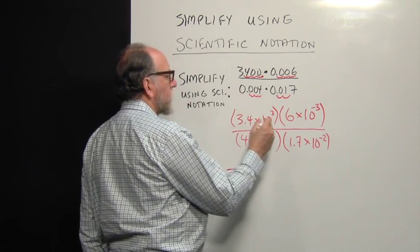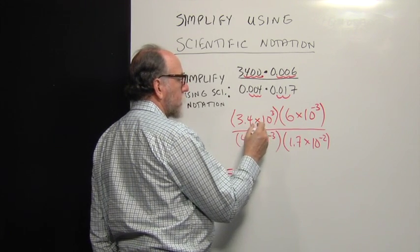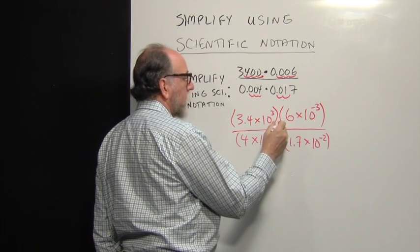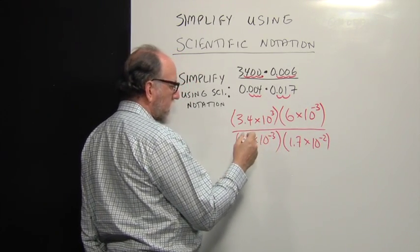So 3.4 times 6. And these are all multiplied, by the way. This is 3.4 times 10 to the third, which is multiplied by 6 times 10 to the negative 3. Since they're all multiplications up there, we can rearrange them.